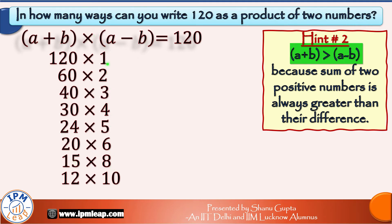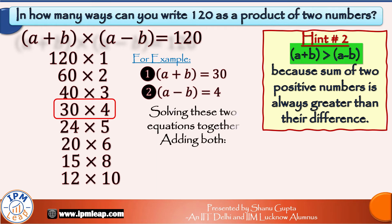So for example, if I take the value of a plus b as 30 and a minus b as 4 and let's solve these two equations together. Adding both, we get 2a is equal to 34 and a is equal to 17. Subtracting both, we get 2b is equal to 26. So b is equal to 13.